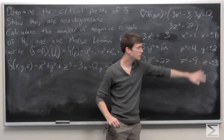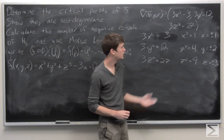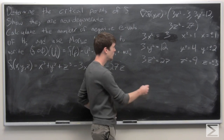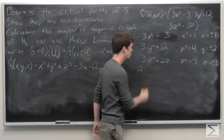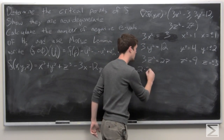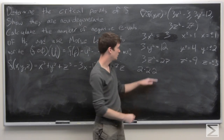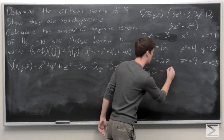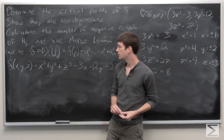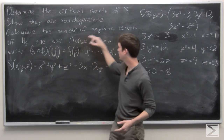These are all of the values where we obtain critical points. There are two choices for x (±1), two choices for y (±2), and two choices for z (±3), giving 2 × 2 × 2 = 8 different critical points for our function f.